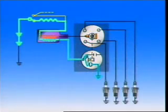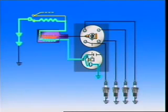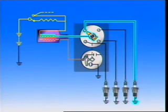The system has two circuits. The primary or low tension circuit initiates the spark. The secondary or high tension circuit produces the high voltage and distributes it to the spark plugs.